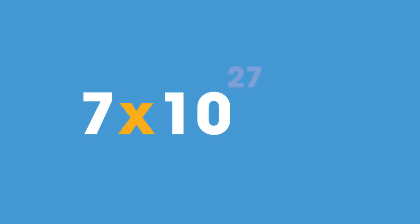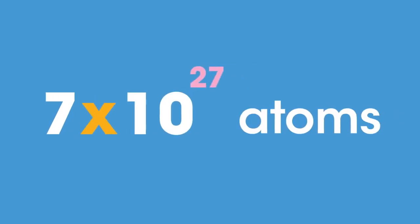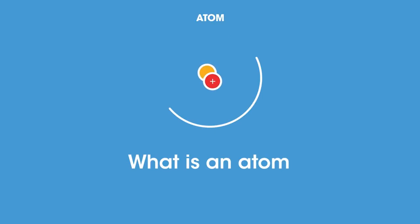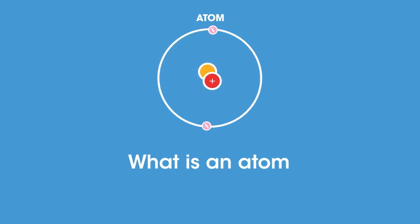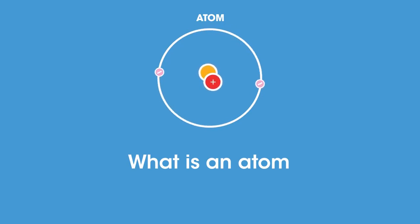That is seven times ten to the 27 atoms. In this video, we are going to look at what atoms are made of, the mass and size of atoms, and the arrangement of electrons in an atom.